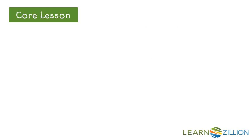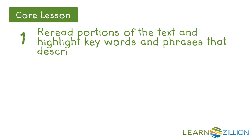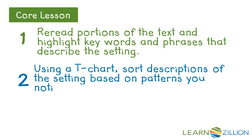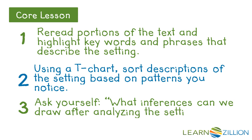Here are the steps we will use to make inferences from the setting in this story. First, we will reread portions of the text and highlight key words and phrases that describe the setting. Next, we will use a T-chart to sort the descriptions of the setting based on patterns that we notice. And finally, we will ask ourselves what inferences can we draw after analyzing the setting of the text.